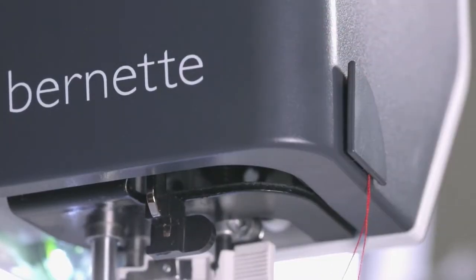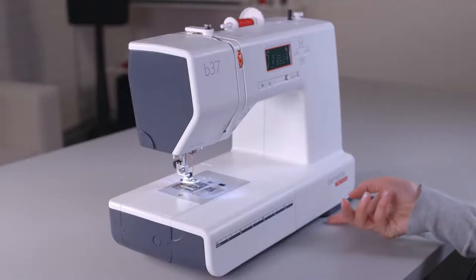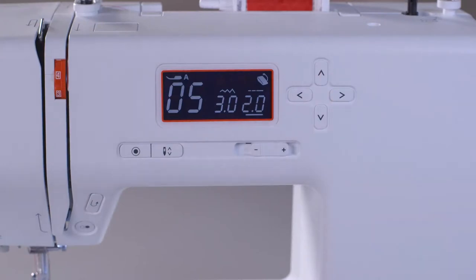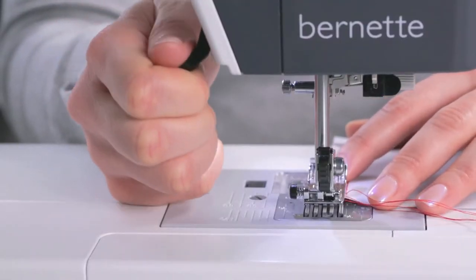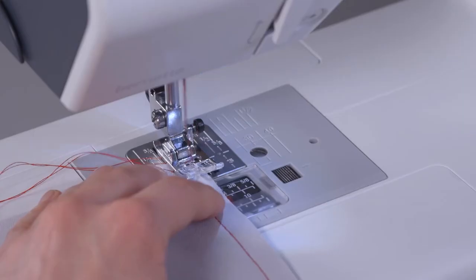The Bernett B37 sewing machine may be the perfect fit. It's available to buy on Amazon. As a computerized model, it's easy to set up, offers 50 stitches in total, runs quietly, and provides a whole host of accessories.